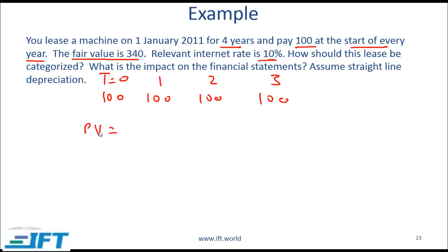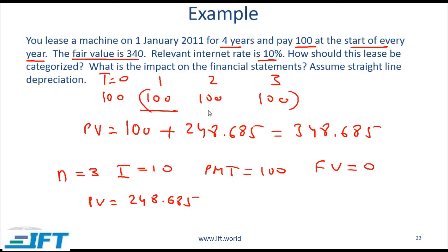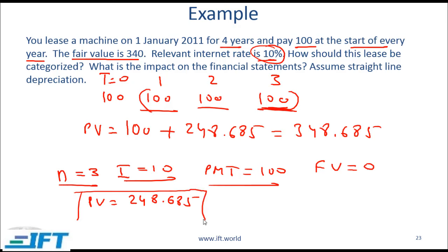There are multiple ways to calculate the present value. One is to simply discount each value and add all the numbers. The other is to treat it as an annuity. The present value is 100 plus the PV of the remaining three payments. For those three payments, plug in n=3, interest rate 10%, payment 100, FV=0, and you get a present value of 248.685. Adding the first 100 gives a total present value of 348.685.